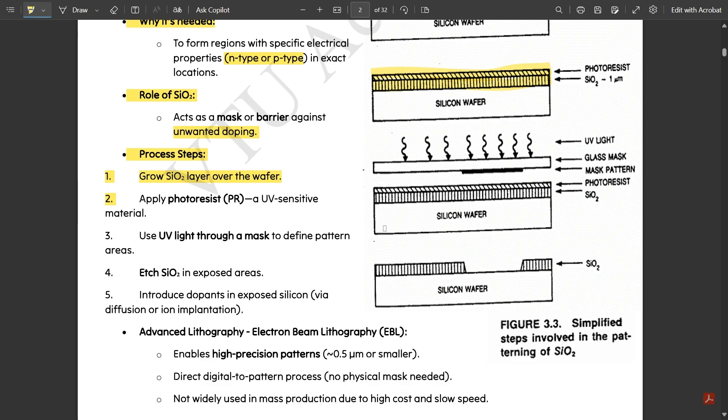Then use UV light through a mask to define the pattern areas. Here you see, just above that they have kept one glass mask. Just above the glass mask they are passing the ultraviolet rays - the ultraviolet light is passed through this mask. Some part of the mask would absorb, but some other part of the UV light would be reflected back. The part which is blocked inside this glass mask would be kept under the mask pattern and would be placed under the photoresist material, so that patterning takes place in the SiO2 layer.